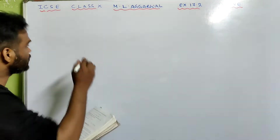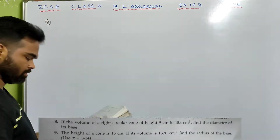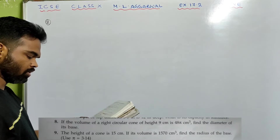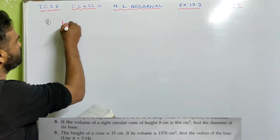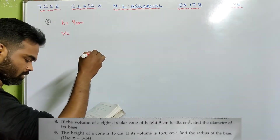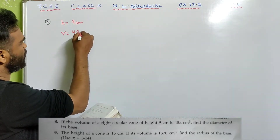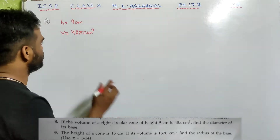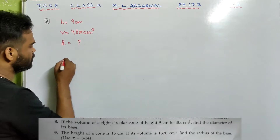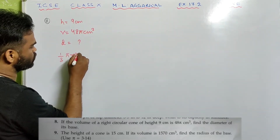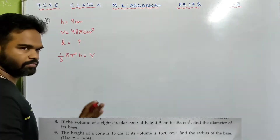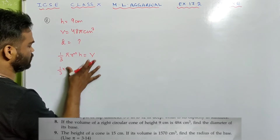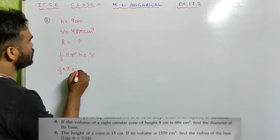Now sum number 8: If the volume of a right circular cone of height 9 centimeter is 48π centimeter cube, find the diameter of its base. This is very easy — volume is given, so we use one-third pi r square h equals volume. Substitute the values: one-third × π × r² × 9 = 48π.